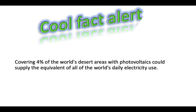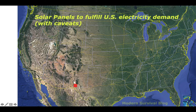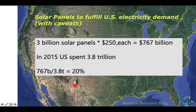That being said, if we covered 4% of the world's desert areas with photovoltaics, we could supply all of the world's daily electricity use. Is this realistic? No, but it shows you the capacity for solar power as well as the impact it could have on the desert. If we covered a specific part of the United States with solar panels, we could meet all U.S. electricity needs — about 3 billion solar panels at $250 each, totaling $767 billion. In 2015, the U.S. spent about $3.8 trillion, so this plan would be about 20% of that year's expenditure, but then we wouldn't need to spend money on fossil fuel subsidies. Again, not realistic, but an interesting thought experiment.